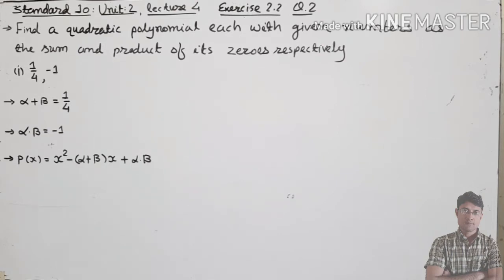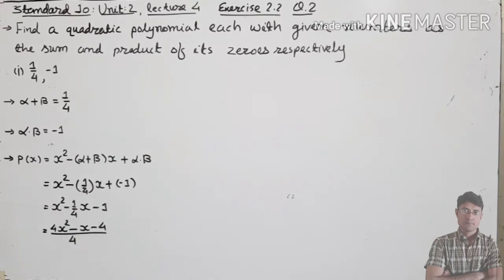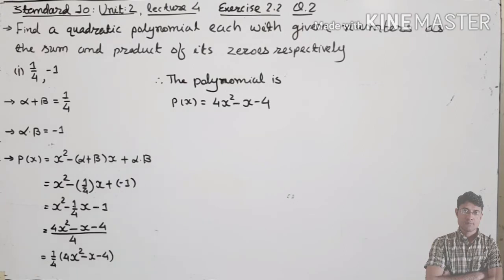Here we'll input alpha plus beta and alpha into beta. Putting in alpha plus beta = 1/4, we get x squared minus (1/4)x minus 1. Taking 1/4 as common factor and simplifying, we get 1/4 in bracket (4x squared minus x minus 4). So the actual polynomial is 4x squared minus x minus 4.